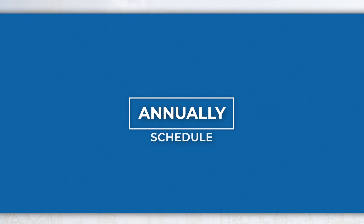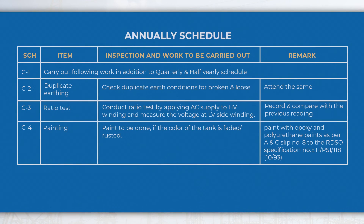Annually schedule: In the annual schedule, perform activities like checking the earth connections and ratio test, etc., in addition to half-yearly and quarterly schedule activities.